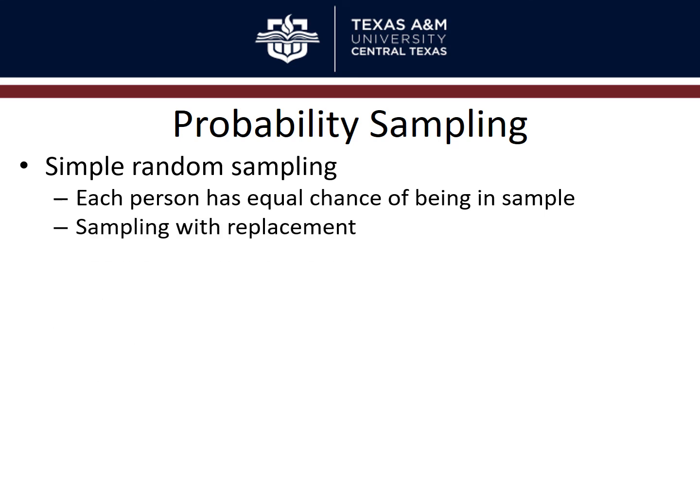To be a truly simple random sample, you also need to use sampling with replacement — after drawing a name, you put it back before drawing again. If you don't, the odds of selection change for each subsequent draw. For these reasons, a truly simple random sample is rarely achieved in practice.